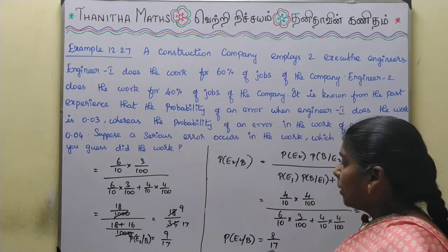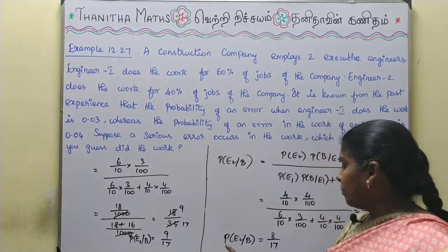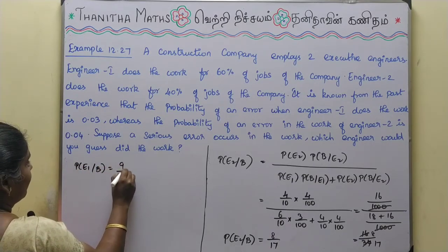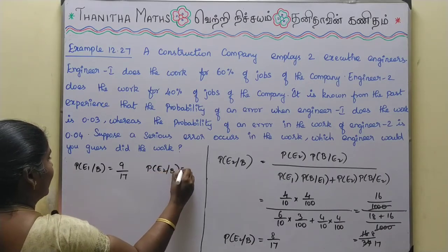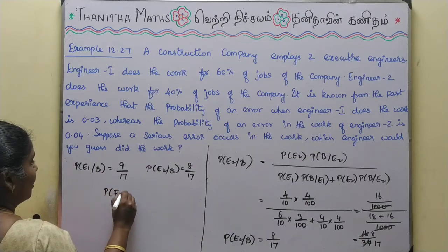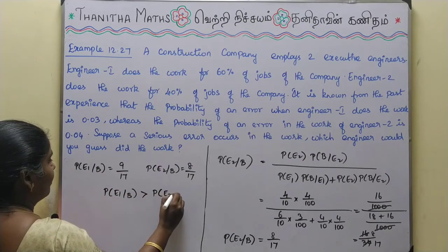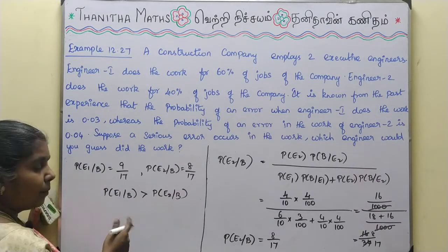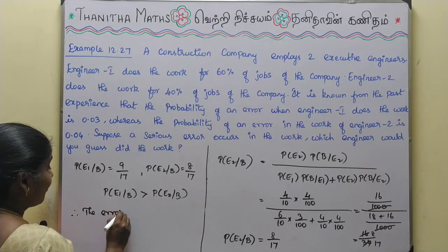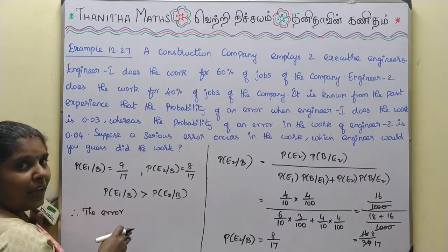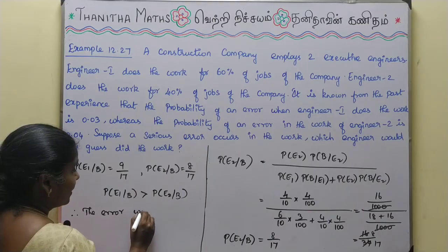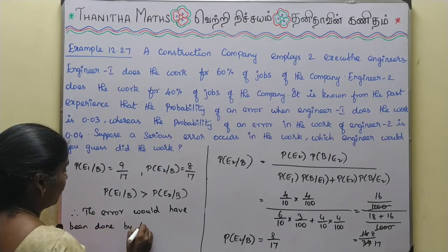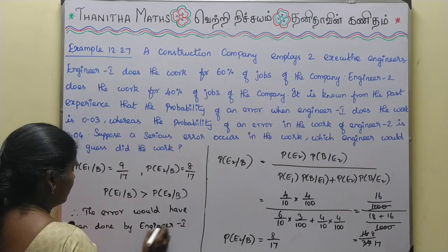So P of E1 given B is 9 by 17 and P of E2 given B is 8 by 17. Since P of E1 given B, which is 9 by 17, is greater than P of E2 given B, which is 8 by 17, the serious error would most likely have been done by Engineer 1. This is our required answer.